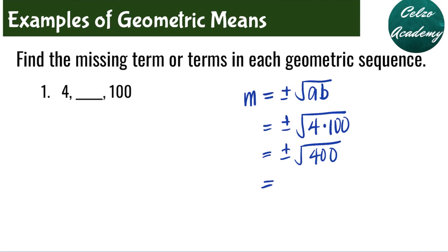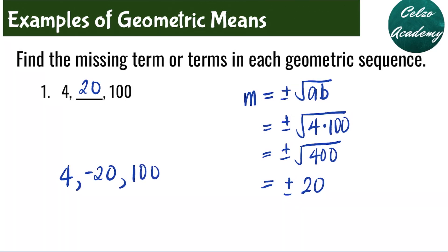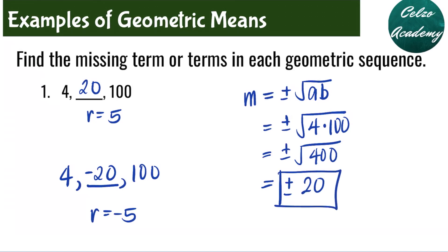What is the square root of 400? It's 20. So the geometric mean of the numbers 4 and 100 can be positive 20 or negative 20 — giving us 4, negative 20, and then 100. If it is positive 20, the common ratio is 5; you multiply the previous term by 5 to get the next term. If we use negative 20 as the middle term, that is a common ratio of negative 5: 4 times negative 5 is negative 20, and negative 20 times negative 5 is 100.